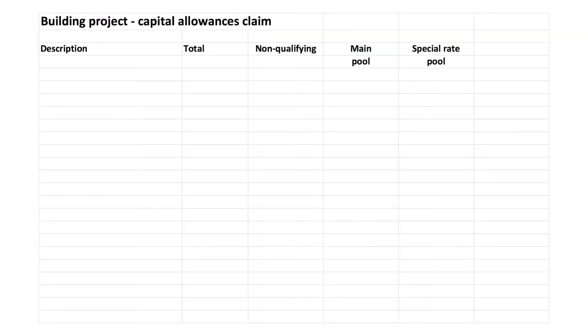Some projects will include expenditure on green assets designed to reduce the consumption of either power or water. A sixth column may be needed in that case, as these may qualify for enhanced capital allowances whereby all the costs are relieved at the outset by way of 100% first year allowances.